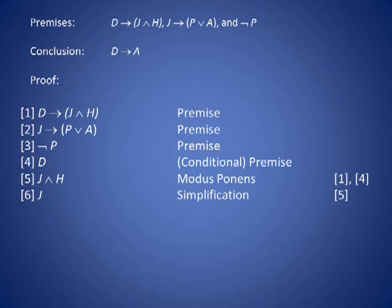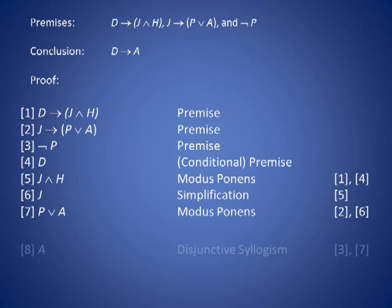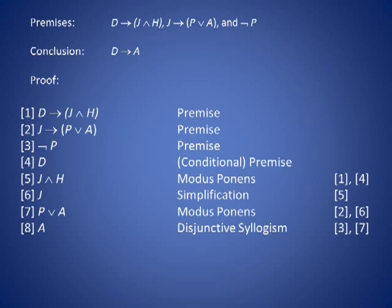Having obtained J, and using line 2, we obtain P or A using modus ponens. Then, with line 3 and the disjunctive syllogism rule, we get A on line 8.